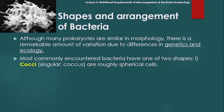اب ہم shapes and arrangement of bacteria کی طرف آتے ہیں۔ Although many prokaryotes are similar in morphology, there is a remarkable amount of variation due to differences in genetics and ecology۔ اکثر prokaryotes morphology میں similar ہوتے ہیں لیکن چونکہ ان کا genetics اور ecology مختلف ہے، اس وجہ سے ان میں کافی variation بھی پائی جاتی ہے اور ان کے shapes different ہوتے ہیں۔